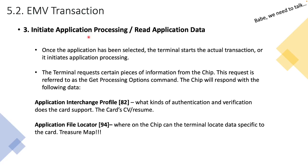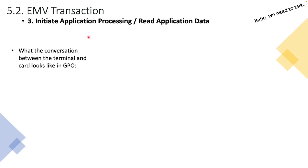The card also returns the Application File Locator, tag 94. You'll remember this from a previous video — we referred to it as a treasure map. Basically the card sends this to the terminal and tells the terminal: 'I've got all this information that you may require, and here is where they are located on me — so feel free to grab a spoon and go digging.' That's basically what the AFL is for.